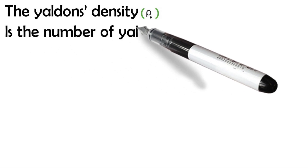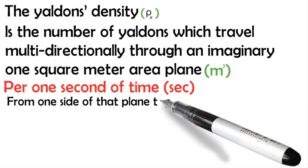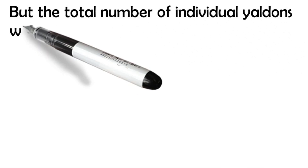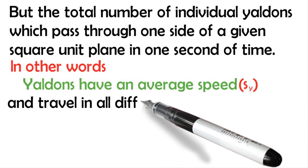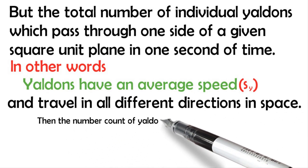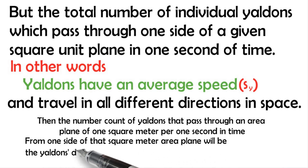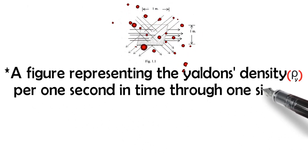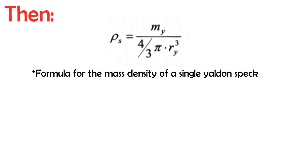The Yaldon density is the number of Yaldons which traveled multidirectionally through an imaginary one square meter area plane per one second of time, from one side of that plane to the other side. Yaldon density is not the density of a single Yaldon spec, but the total number of individual Yaldons which pass through one side of a given square unit plane in one second of time. The density of a single Yaldon spec will be its mass divided by the volume it occupies.